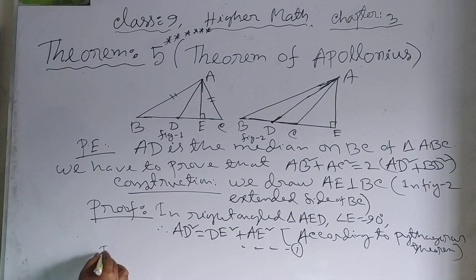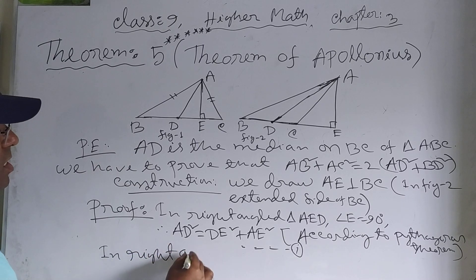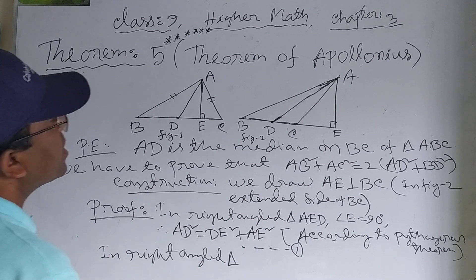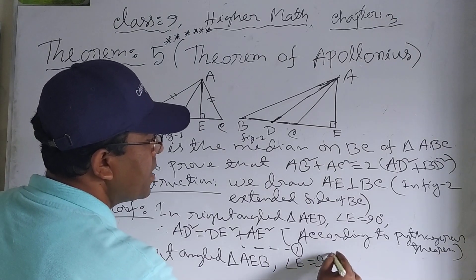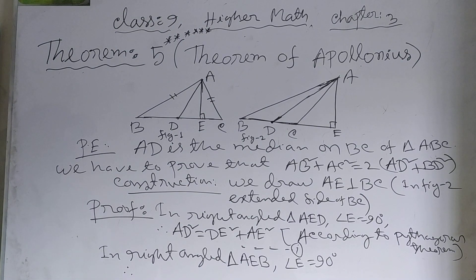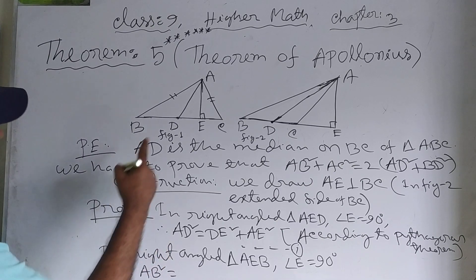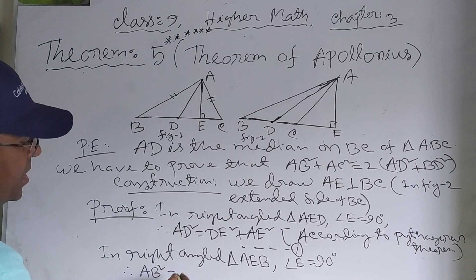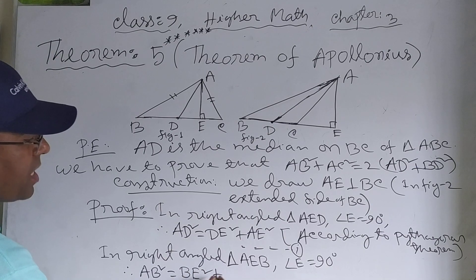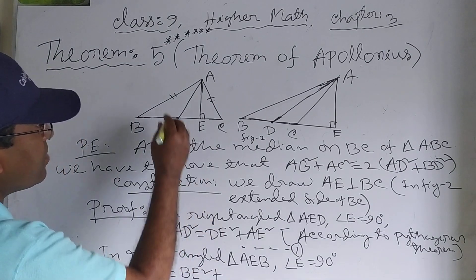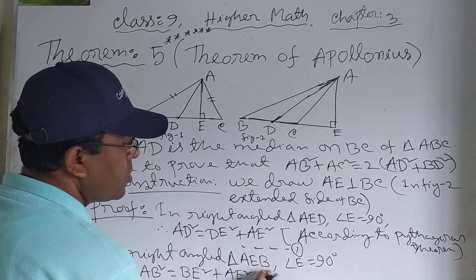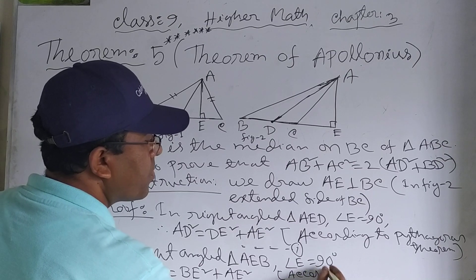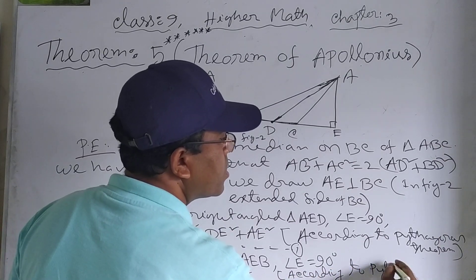In right angle triangle AEB, angle E equals 90 degrees. According to the Pythagoras theorem: AB² = BE² + AE². So AE² = AB² - BE².